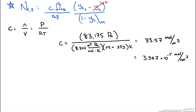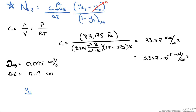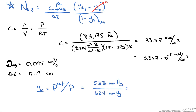We have the diffusivity and distance already determined, so next we determine the mole fraction of ether at the liquid surface using Raoult's law. Raoult's law states that the mole fraction of ether in the vapor phase times total pressure equals the mole fraction in the liquid phase times its saturation pressure. Since the solution is pure ether, the liquid mole fraction is 1. Plugging in the known values, the mole fraction of ether at the surface is 0.855.